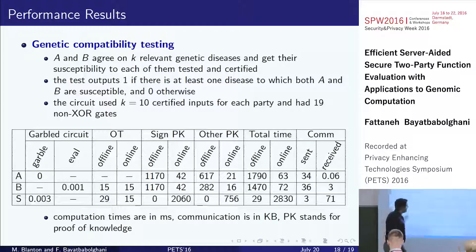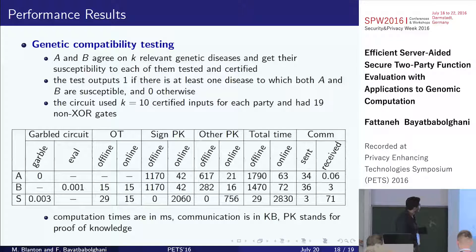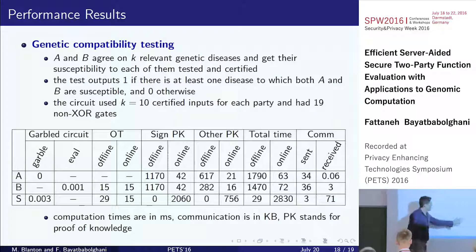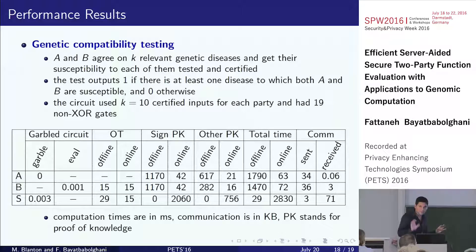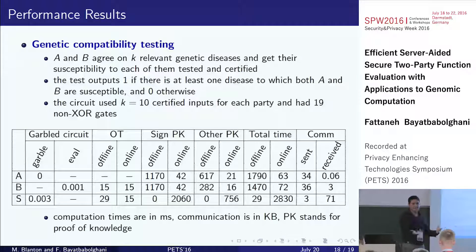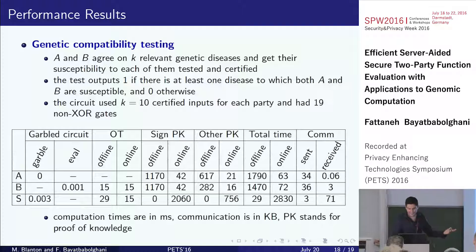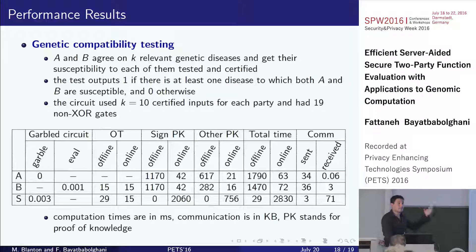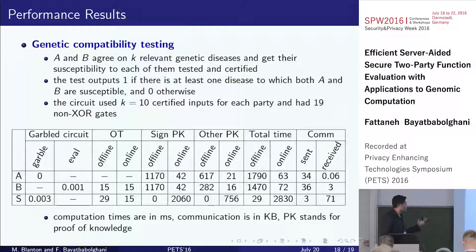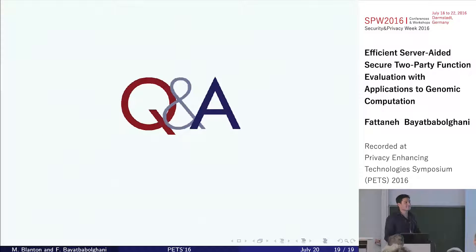For genetic compatibility, they incorporated signatures and zero-knowledge proofs of knowledge — all timings are in milliseconds and communication in kilobytes. Their paper also implemented other computations including matrix multiplication and Hamming distance. Their key claim is that while they're not the first to use server-aided computation, their complexity table shows their approach beats all prior work with the fastest performance. The paper is worth reading for the full details.